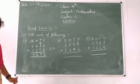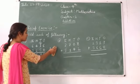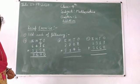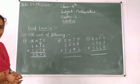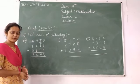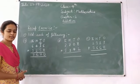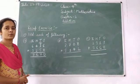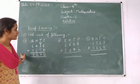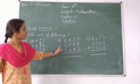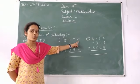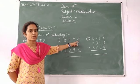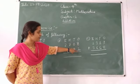Dear students, you can also find these questions in your book at page number twenty of chapter second. The exercise is on page number twenty of your book. Next example: always start counting from the ones place.